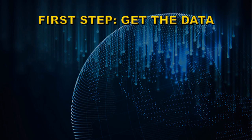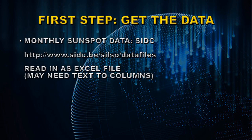The first step you must take is to get the right data. If you want to get the monthly sunspot data, you go to the Solar Influences Data Center — the link is below — and read in the data as an Excel file. I did it as monthly data, and you may need to convert the columns of text into columns of numbers; you do that under the Data tab in the Excel workbook.